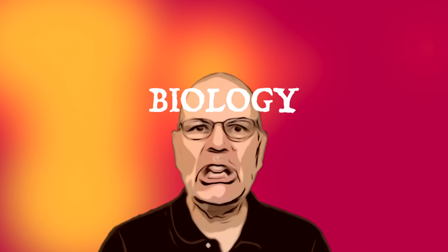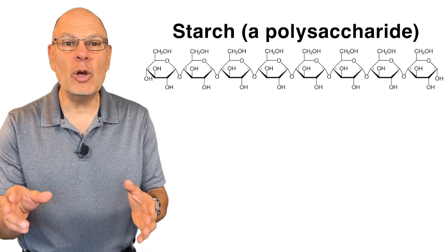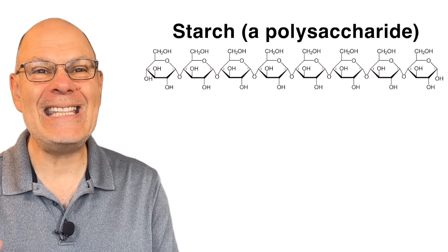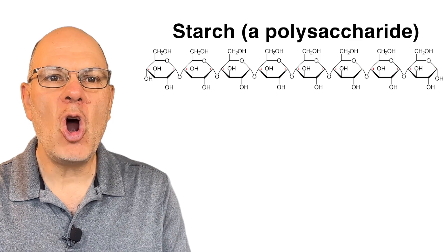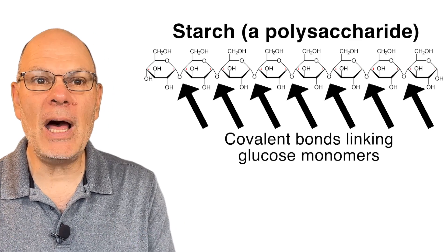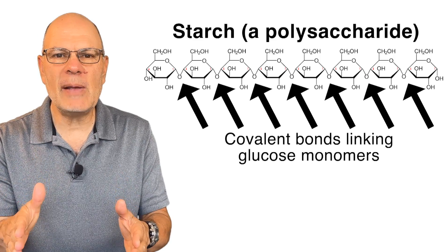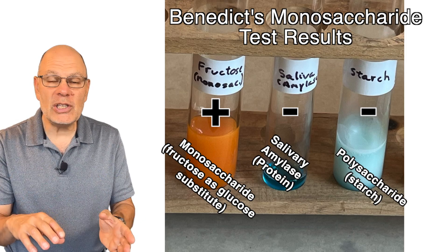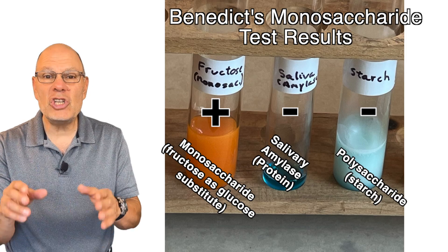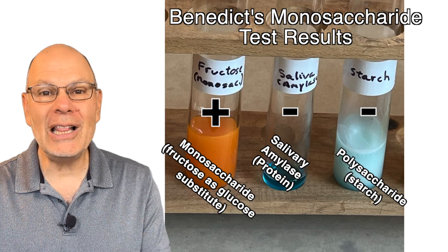Here comes our common enemy, biology confusion. Didn't I say that starch is composed of glucose monomers? I did, and it is. But in starch, all of those monomers are linked together by covalent bonds, and that makes starch a completely different chemical substance from glucose. That's why glucose tests positive for a monosaccharide, but starch doesn't. Starch isn't a monosaccharide. It's a polysaccharide.